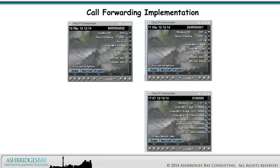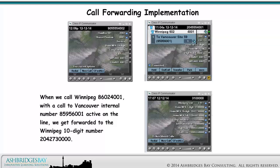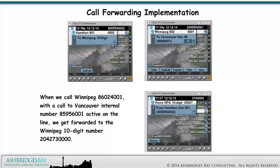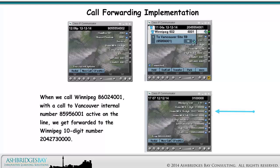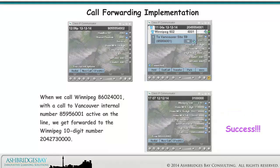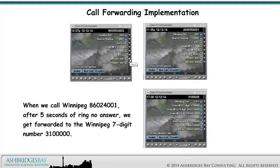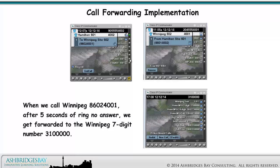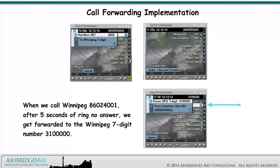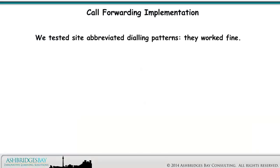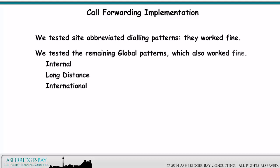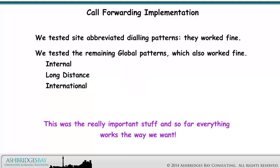First, we call Vancouver internal number 8-595-6001. When we call Winnipeg 8-602-4001 with a call to Vancouver internal number 8-595-6001 active on the line, we get forwarded to the Winnipeg 10-digit number 204-273-0000. When we call 8-602-4001 after waiting 5 seconds of ring no answer, we get forwarded to the Winnipeg 7-digit number 310-0000. We tested site abbreviated dialing patterns — they worked fine. We tested the remaining global patterns — internal, long distance, and international — and they also worked fine. This was the really important stuff, and so far everything works the way we want.